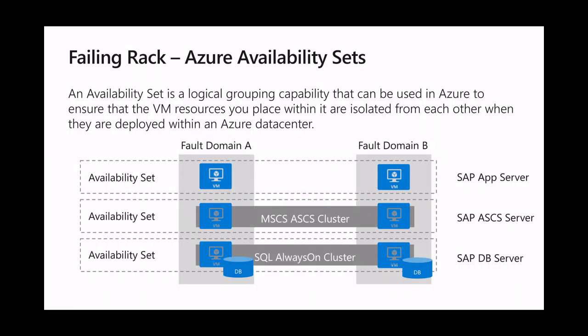We discussed earlier that not just a single blade may fail but a full rack. In this case, the impact to an SAP environment would be much more severe — a single blade may impact a single system, but a full rack may impact multiple systems. To protect SAP applications, Microsoft Azure offers availability sets, which give us the option to spread an SAP system's components across multiple hardware racks. That way, we can increase protection against both unplanned and planned downtime, because the impact to the service would be just a single component and not the entire system.